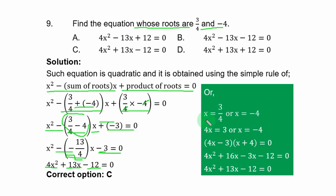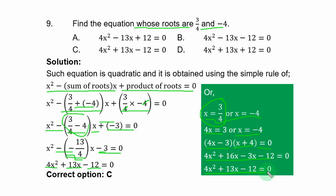Alternatively, equate each root to x: 4x = 3 (multiplying by 4 to clear the fraction), so 4x − 3 = 0; and x + 4 = 0. Multiplying these factors: (4x − 3)(x + 4) = 0. Expanding gives 4x² + 16x − 3x − 12 = 4x² + 13x − 12 = 0. This confirms option C.